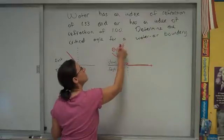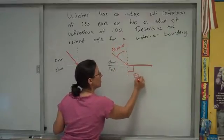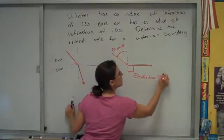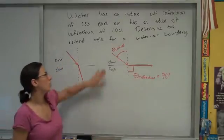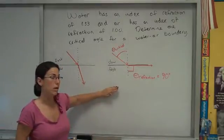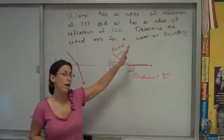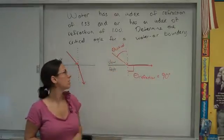The critical angle is the incident angle that makes the refracted angle equal to 90 degrees. Critical angle only happens when you go from a slow material to a fast material. If you send light in beyond the critical angle, you don't get any refraction, only reflection. Before the critical angle, you get some refraction and some reflection.